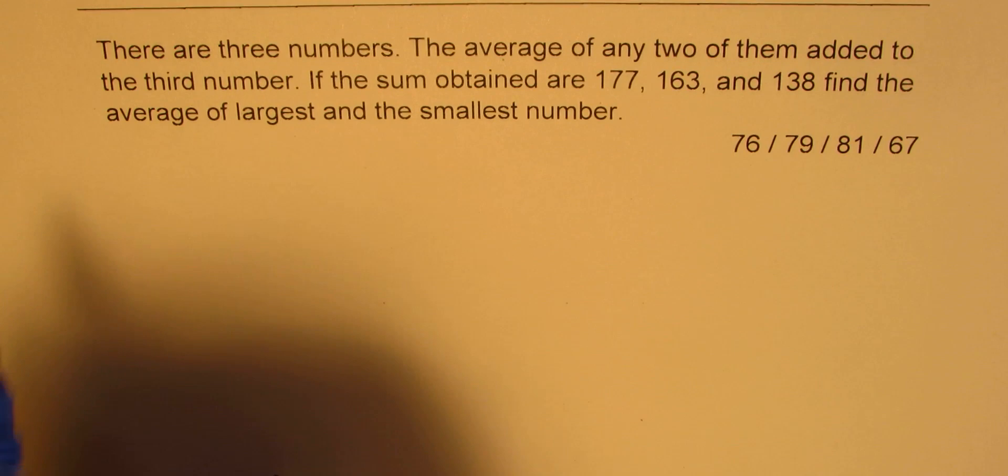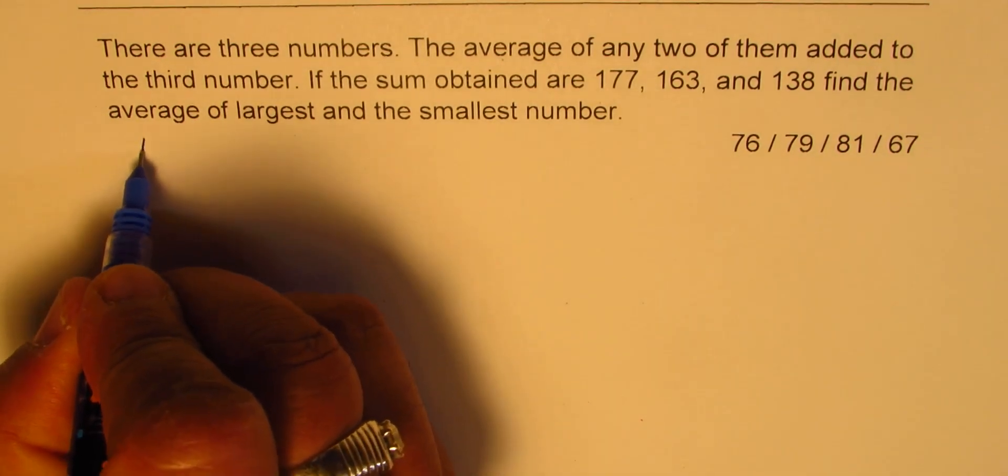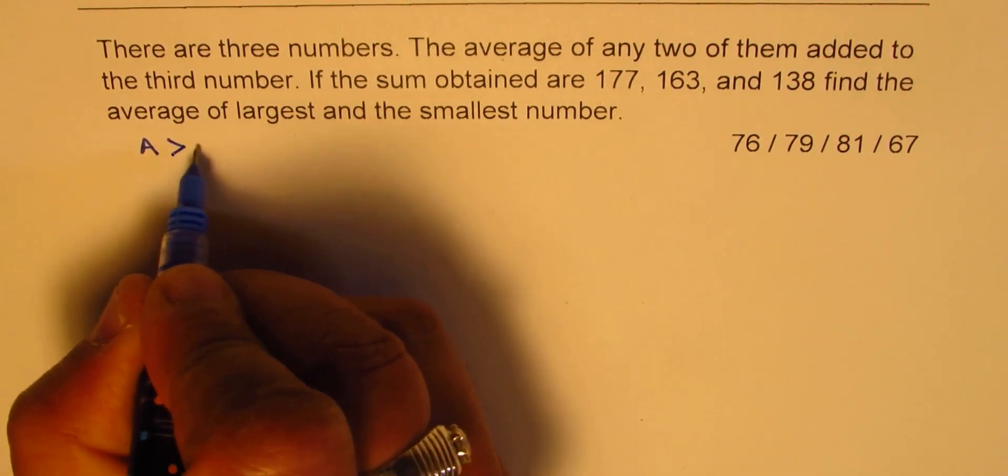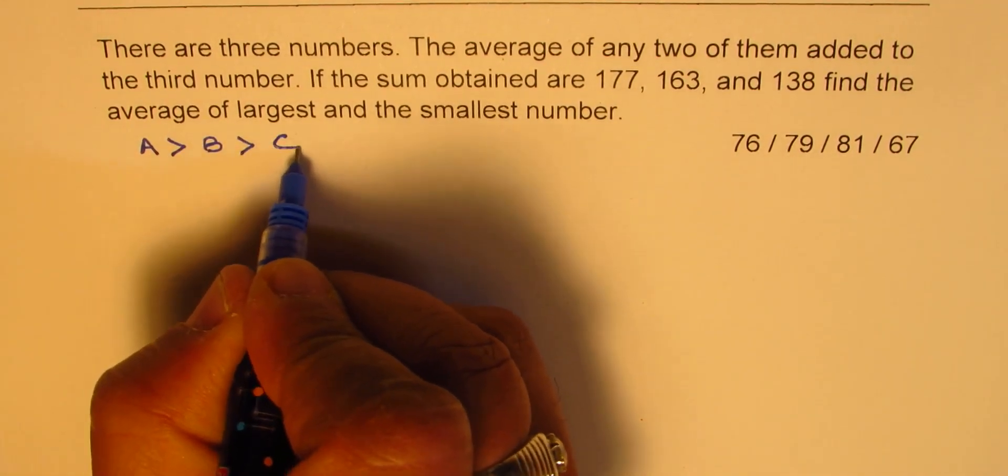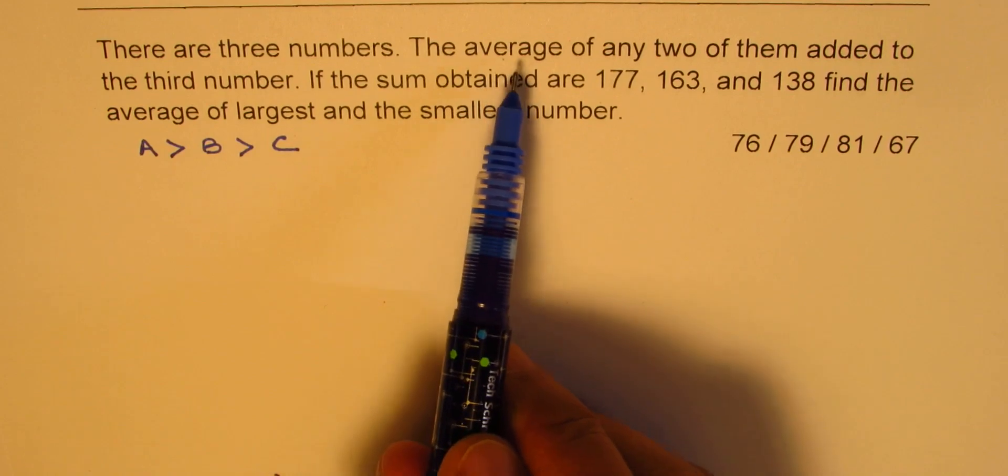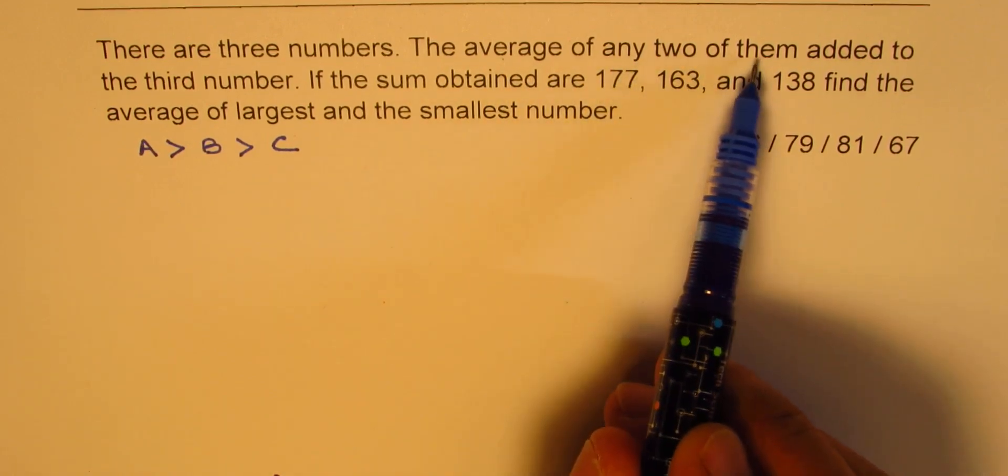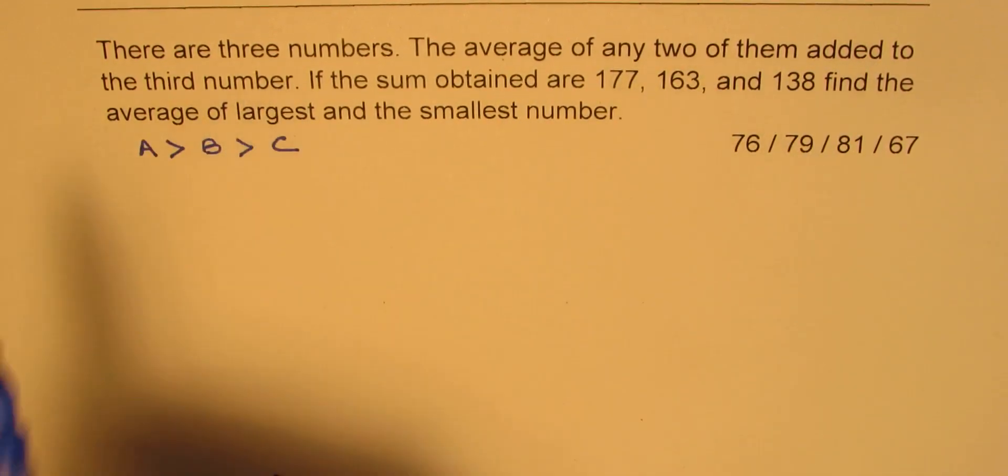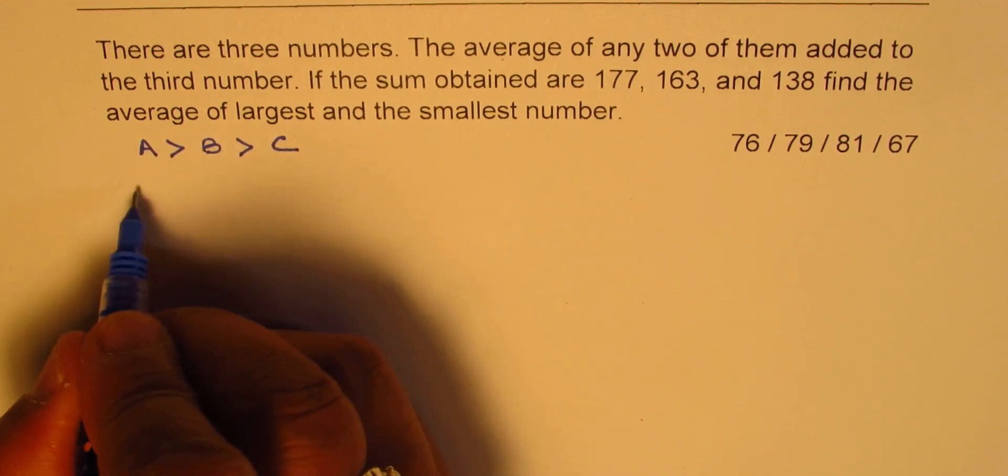Here is the shortcut method: Let the numbers be A, B, and C, and we are saying A is greater than B and B is greater than C. This is all I'm trying to explain. Now what we are given here is average of any two of them added to the third.